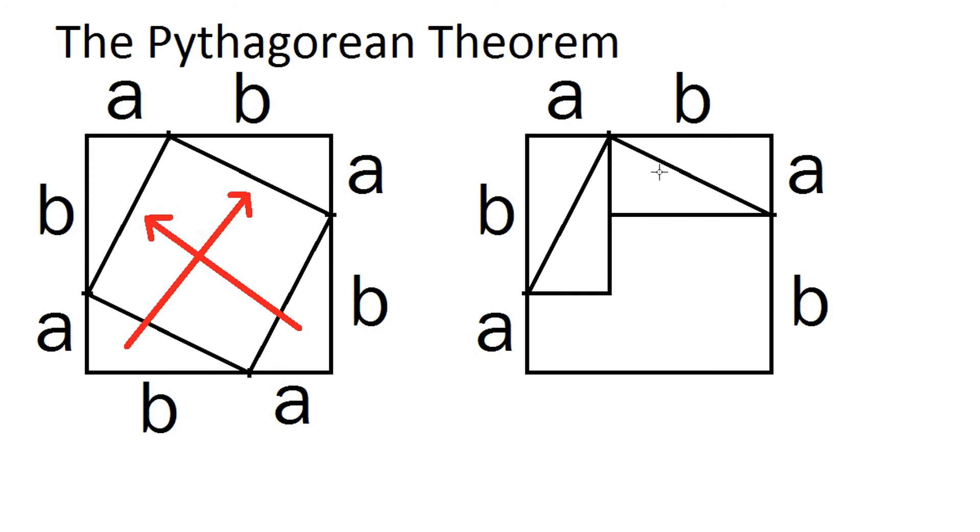And keep in mind that the area of the shape in total is exactly the same. We still have these four triangles. So that would mean that the leftover area, this part here, must be the same area as this inner part, because we haven't changed anything. And as you would probably guess, that leftover shape is exactly a squared plus b squared.